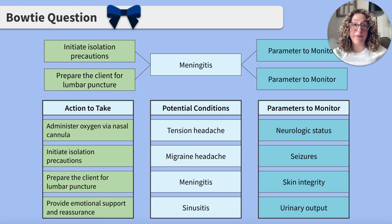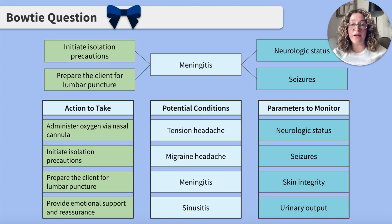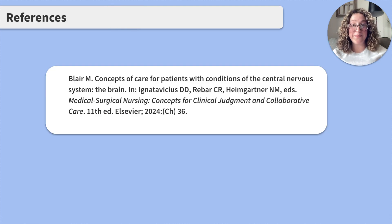The last category is parameters to monitor. The most important parameters to monitor would be neurologic status and seizures. While skin integrity is important, it is not the most important. And urinary output measures are not pertinent to this client at this time.